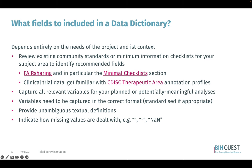It is important to capture all relevant variables for your planned or potential meaningful analyses. This means that variables need to be captured in the correct format and standardized if appropriate. Additionally, providing unambiguous textual information is crucial in ensuring that all users of the data dictionary understand the meaning of each variable. Finally, it is also important to indicate how missing values are dealt with, such as through the use of symbols like dash or NaN.